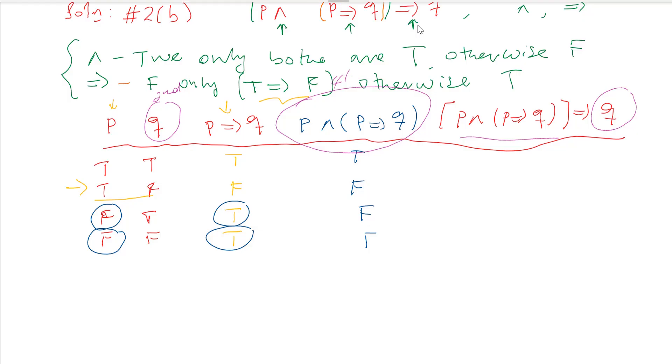True implies true, which is true implies true is true. Let it be false implies false. False implies false, which is equivalent to true. Again false implies is true.